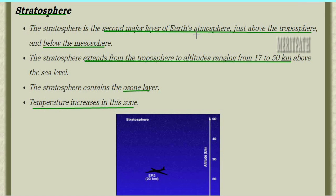Next is the stratosphere. Stratosphere is the second major layer of the earth's atmosphere and is located above the troposphere and below the mesosphere. It ranges at an altitude of 17 to 50 kilometers above sea level. The stratosphere contains the ozone layer, which is why the temperature is always higher in this zone.